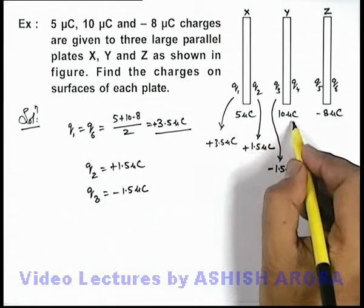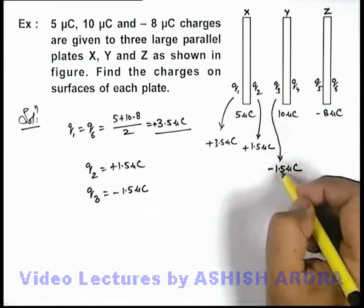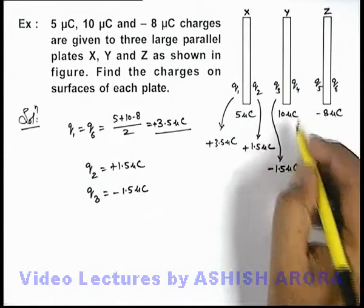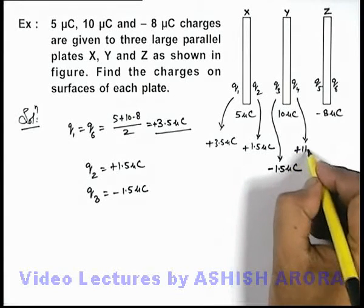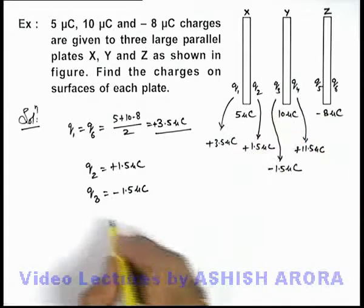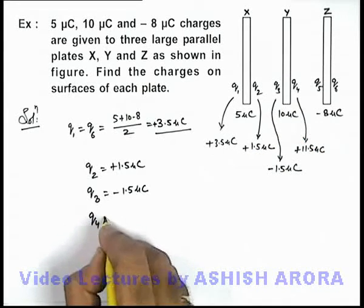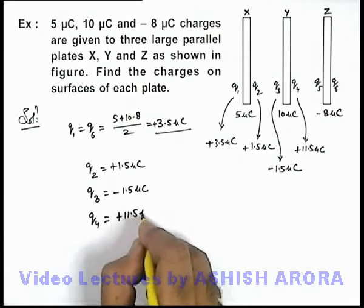And as the total charge on the plate Y is 10 micro coulomb, and on its left face it is minus 1.5 micro coulomb, that means the charge q4 can be written as plus 11.5 micro coulomb. That's why the total charge on the system will be 10 micro coulomb. So here we get the value of charge q4 which is plus 11.5 micro coulomb.